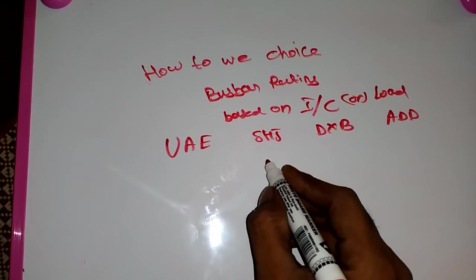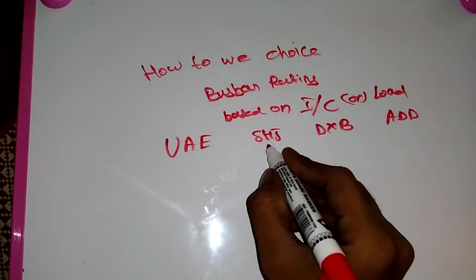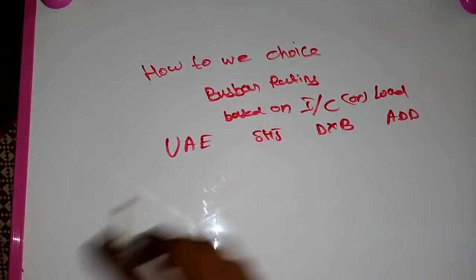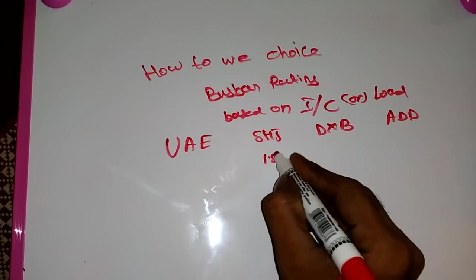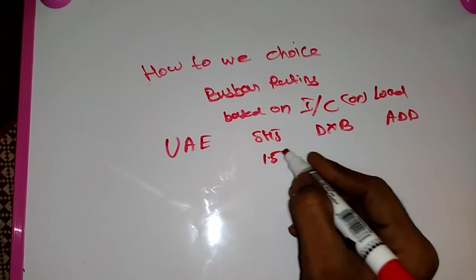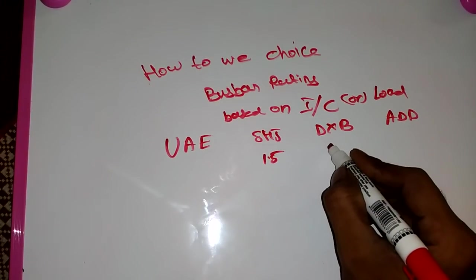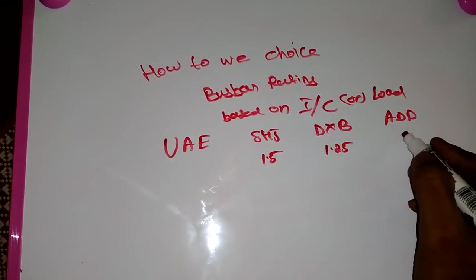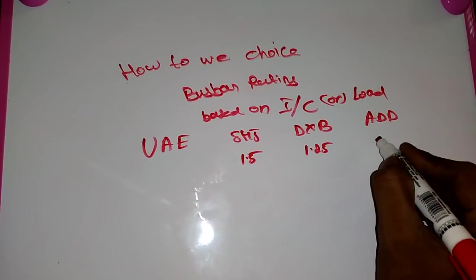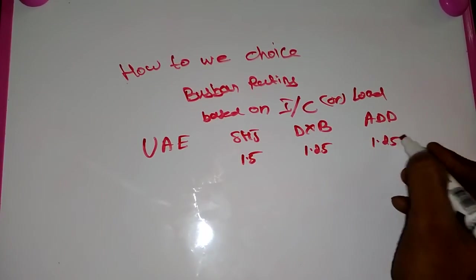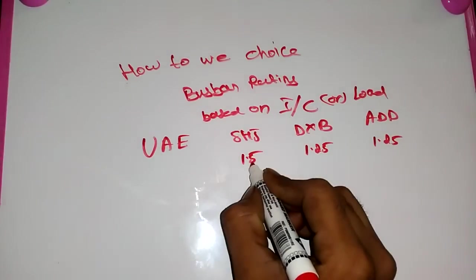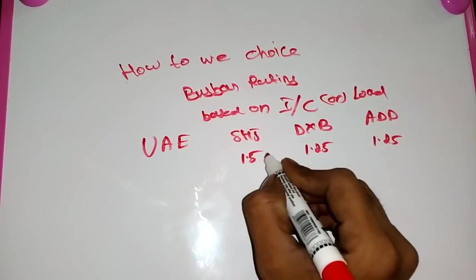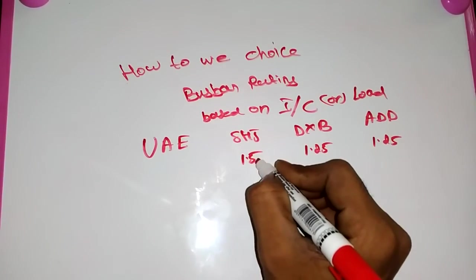In Sharjah, they are using a multiplication factor of 1.5. In Dubai, they have a multiplication factor of 1.25, and then Abu Dhabi also has a multiplication factor of 1.25. What is this multiplication function? These are the things that Emirates will allocate for.